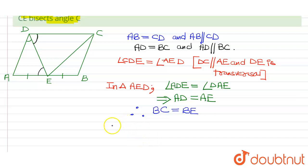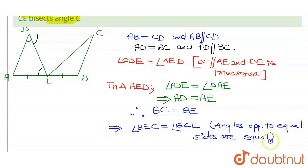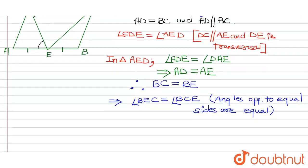So that implies if BC is equal to BE, then angle BEC should be equal to angle BCE, since angles opposite to equal sides are equal. And angle BEC is equal to angle ECD.